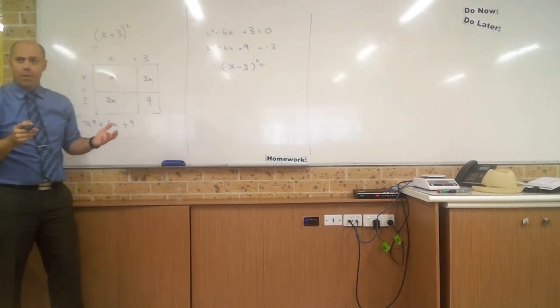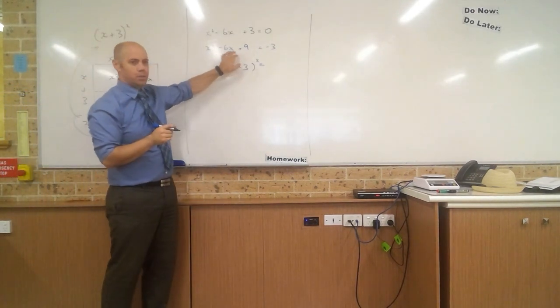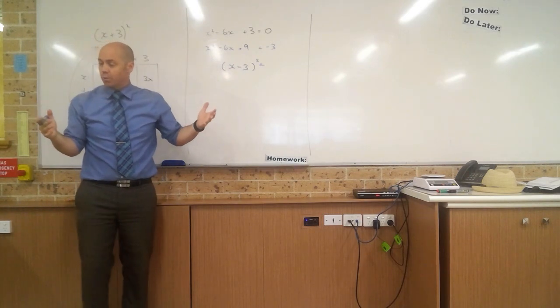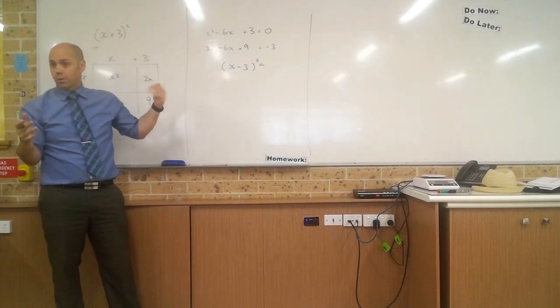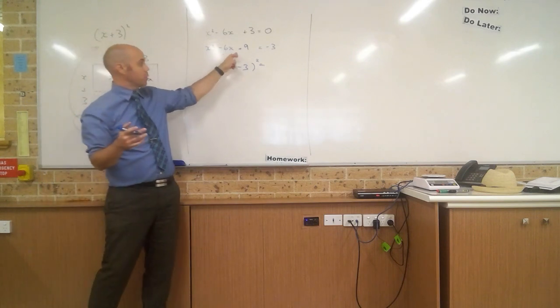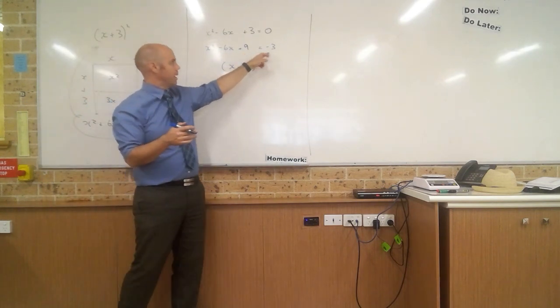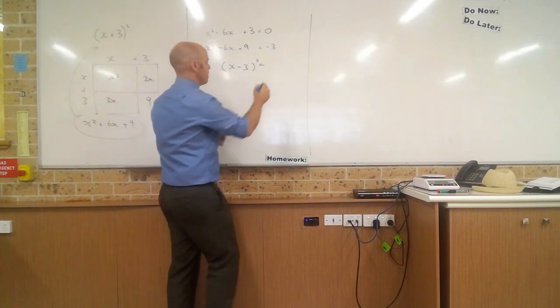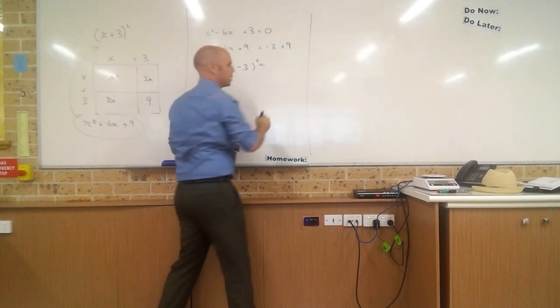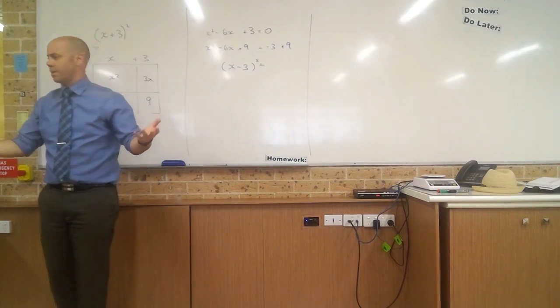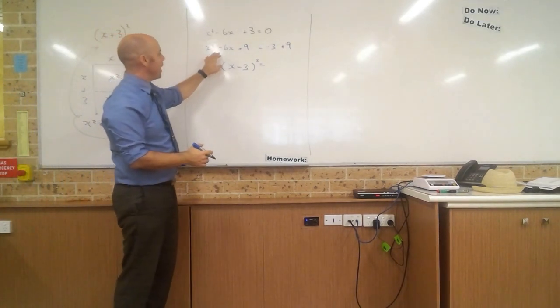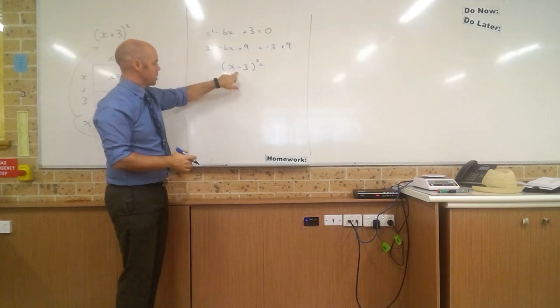Now, what have I done though? I've actually put something extra into this expression. If I want to keep it an equal equation, what do I need to do? If I put a plus 9 on this side, what do I need to do to make this side equal to the same thing? Plus 9. I've got a plus 9 on this side too. Just like a set of scales. If I do one thing on one side, I've got to do the same on the other side. And so, I've now got an expression that can factorize to this. x minus 3, all squared.